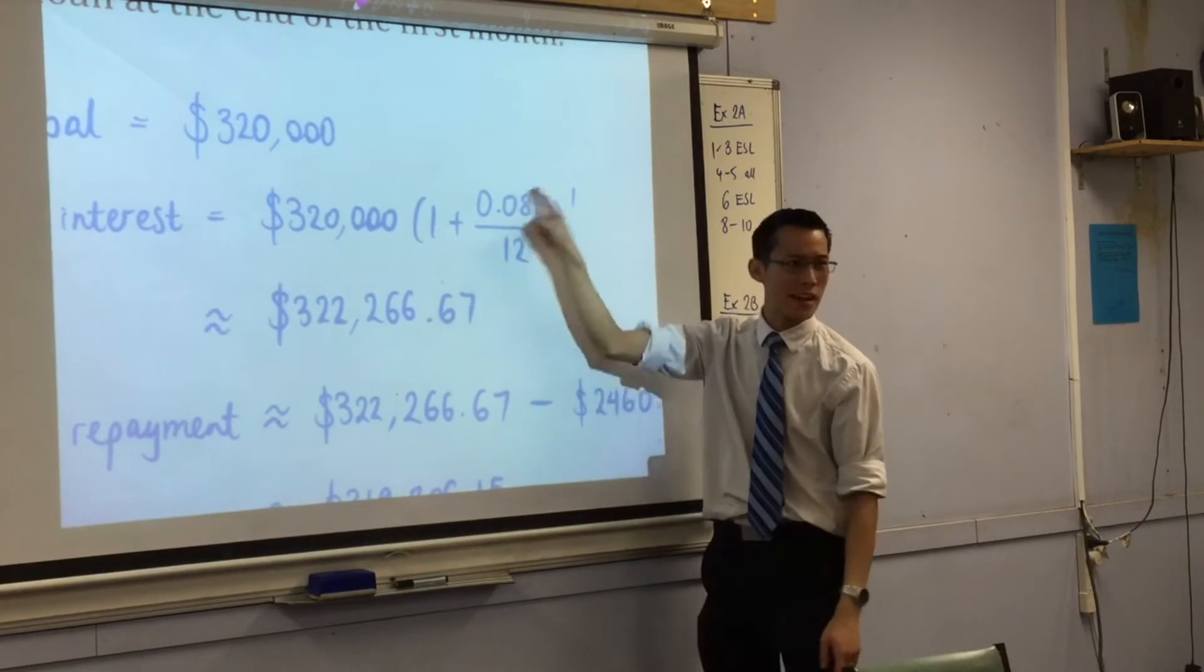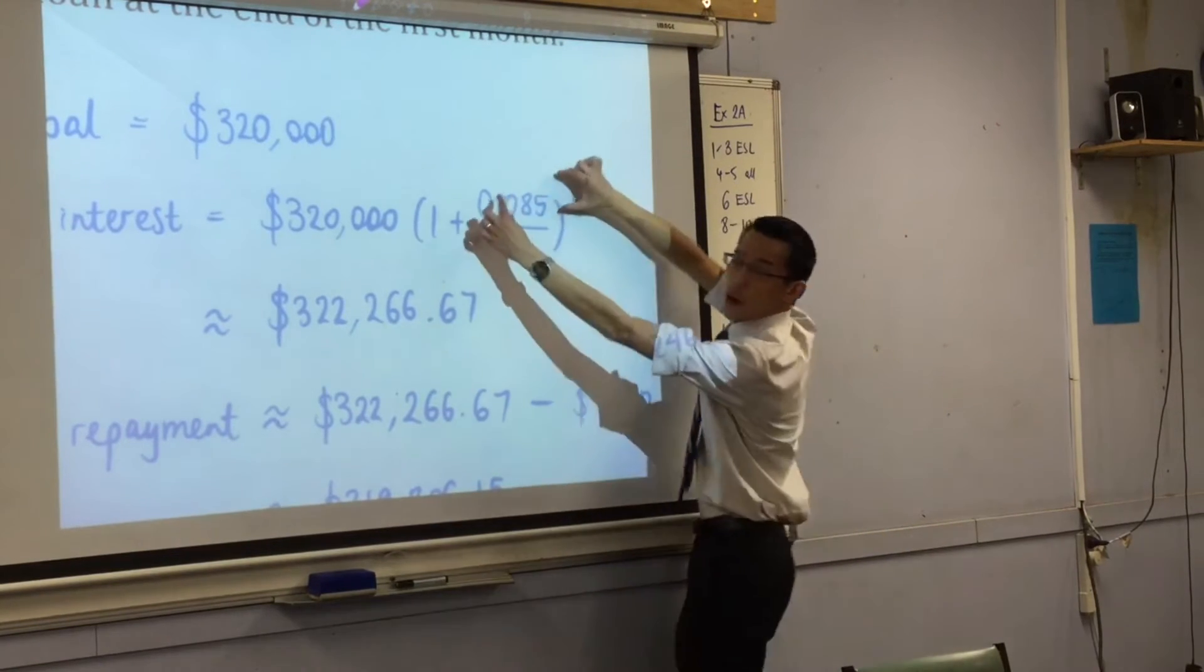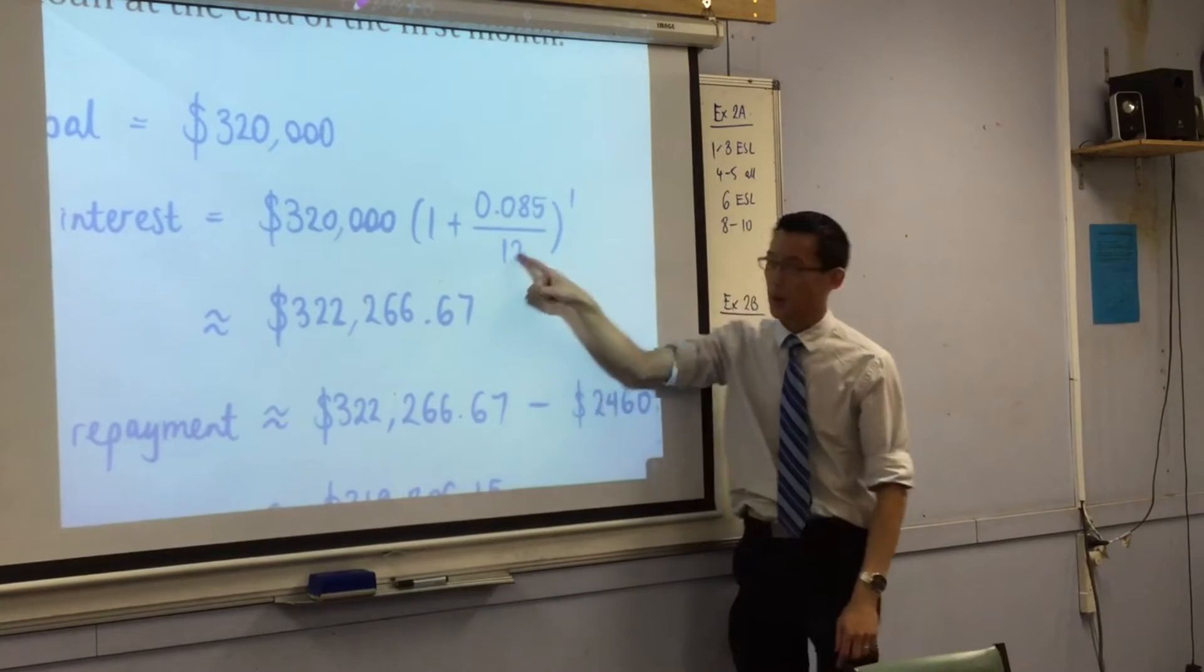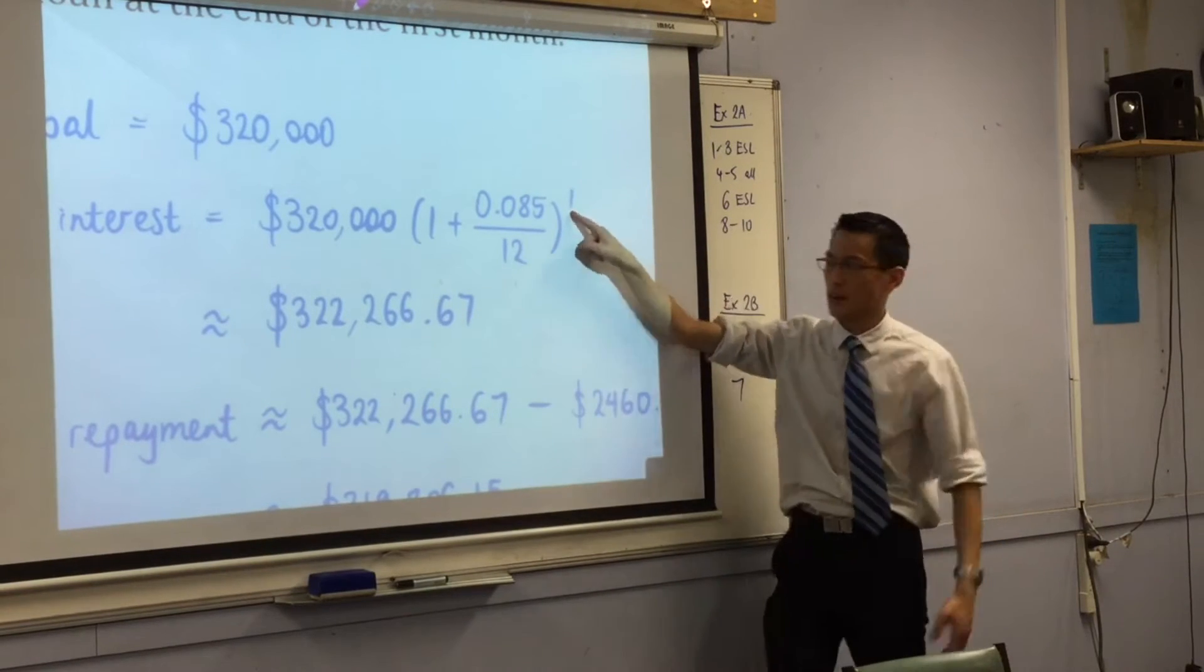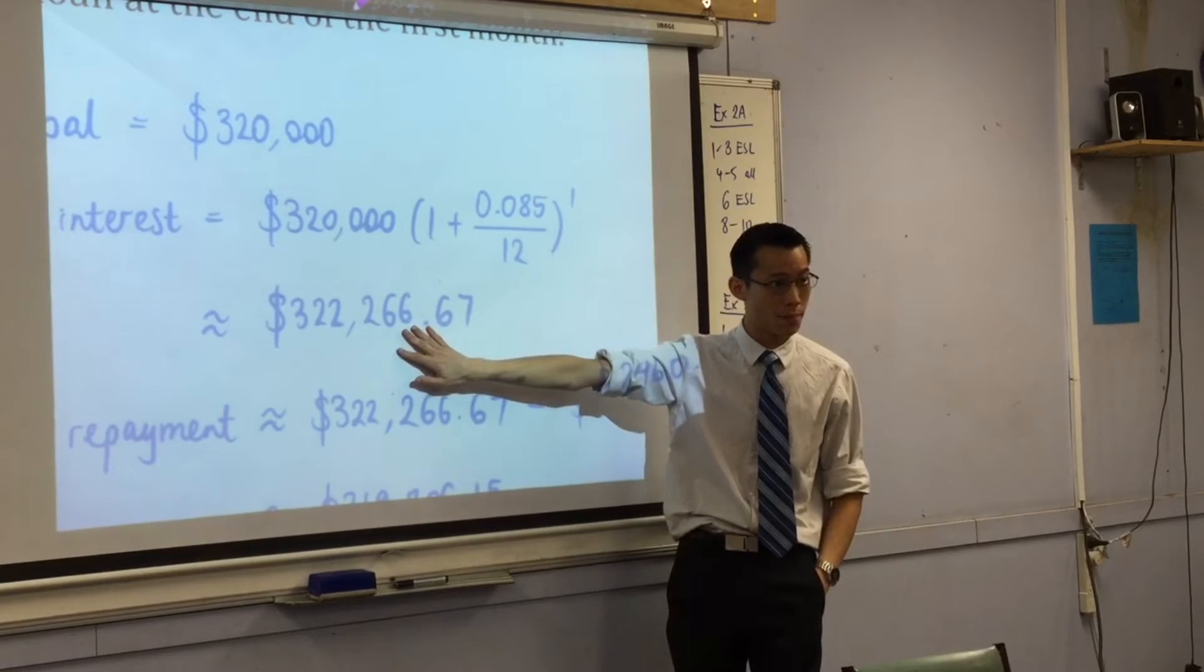So why is this divided by 12? What's that about? It's monthly. That's per annum. And this is per month. It's one because one month has passed. And your calculator will give you this number.